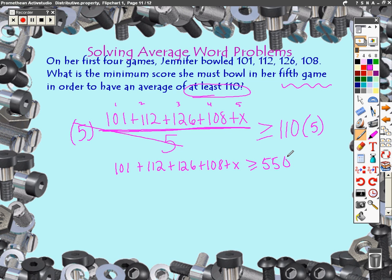101 plus 112 plus 126 plus 108 plus x is greater than or equal to 550. Now if you go back and look, you remember that I had a number 550. Alright, I can do two things from here.